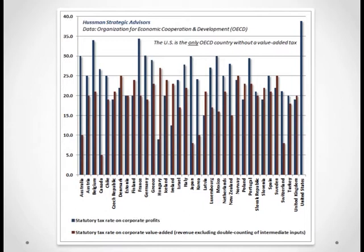You can see this in the following charts. The first chart shows tax rates in OECD countries. Most of these countries have two bars, except the U.S. The blue bar is the tax rate on corporate profits, and the red bar is the tax rate on corporate value added — essentially corporate revenues, excluding double counting. Corporate revenues are much larger than corporate profits, but in the U.S. there's no value added tax at all. So yes, the tax on corporate profits is higher in the U.S. than elsewhere, but that alone is an apples-to-oranges comparison because the U.S. is the only country without a value added tax.